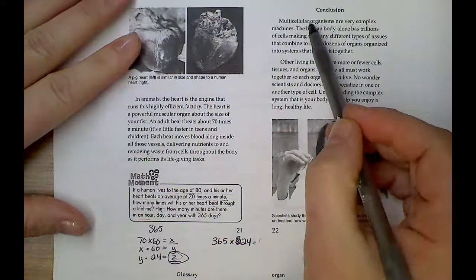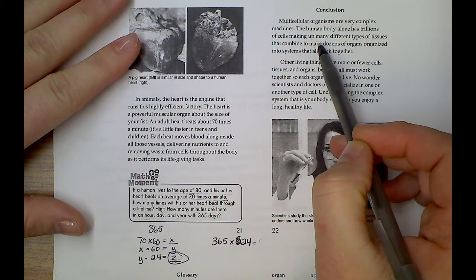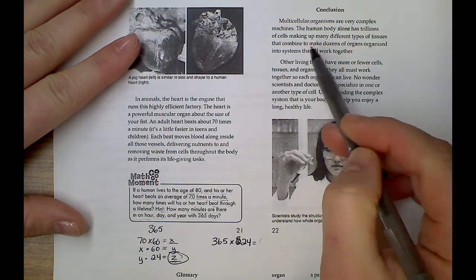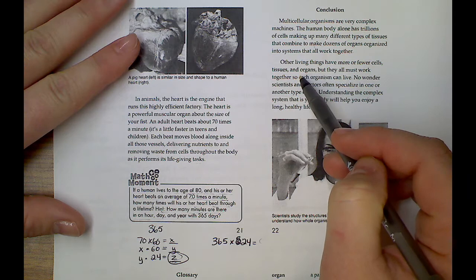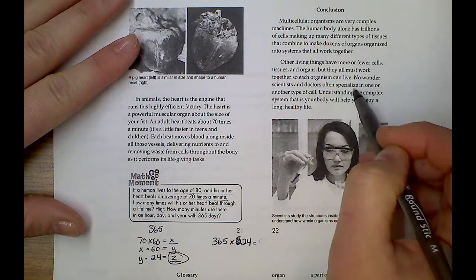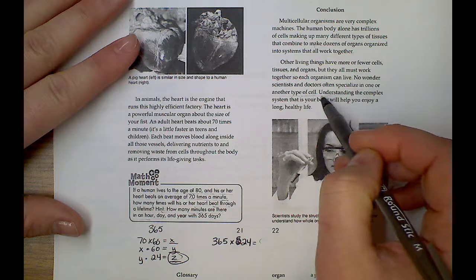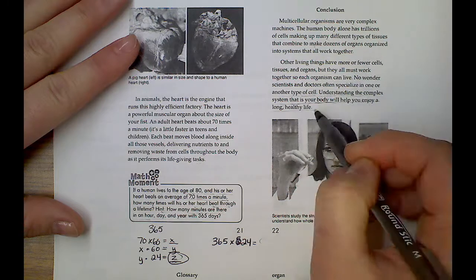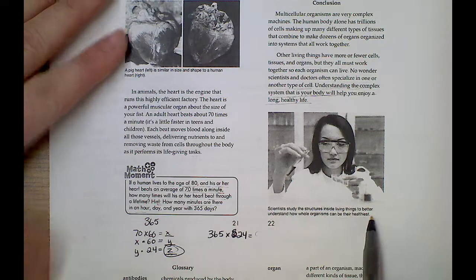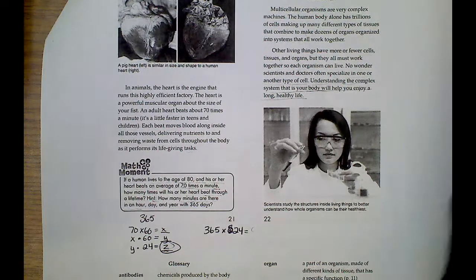Conclusion. Multicellular organisms are very complex machines. The human body alone has trillions of cells making up many different types of tissues that combine to make dozens of organs organized into systems that all work together. Other living things have more or fewer cell tissues and organs, but they all work together so each organism can live. No wonder scientists and doctors often specialize in one other type of cell. Understanding the complex system that is your body will help you enjoy a long, healthy life. Scientists study the structure inside living things to better understand how the whole organism can be their healthiest.